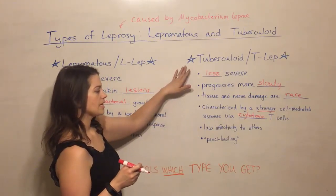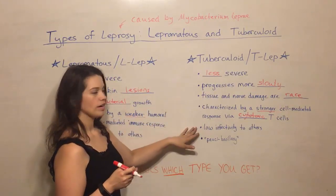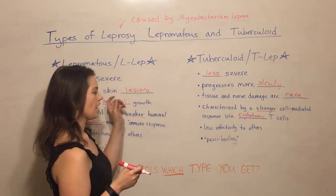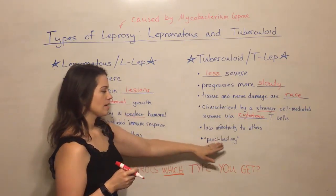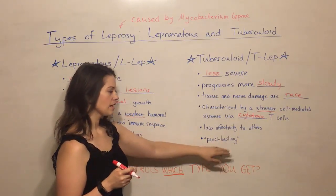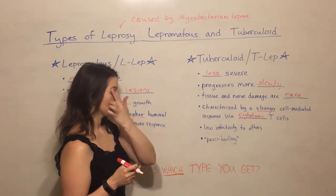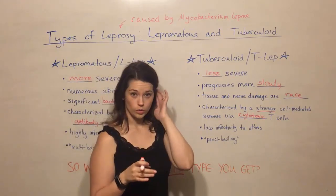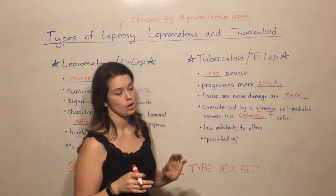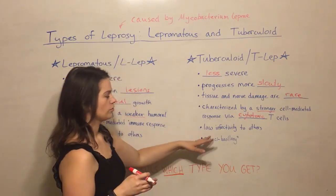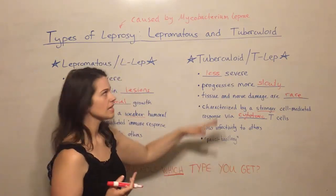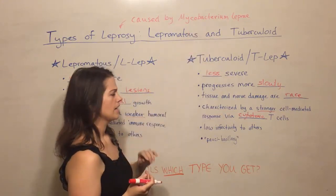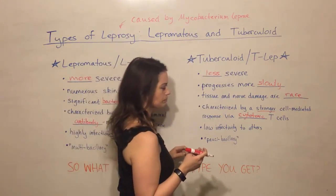T-LEP has a lower infectivity to others relative to L-LEP. It's sometimes referred to as paucibacillary — pauci coming from the Latin for few or small. So again, few bacilli, few bacteria in those macrophages.